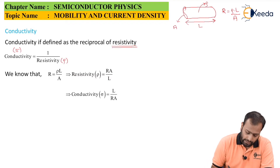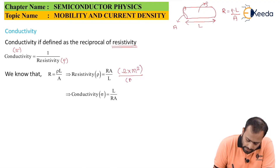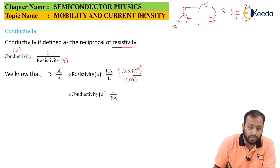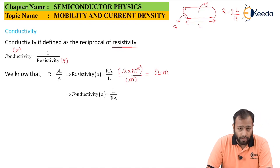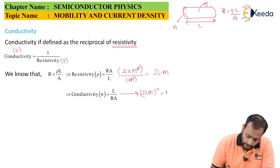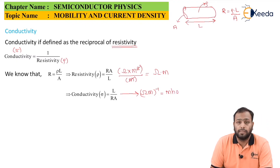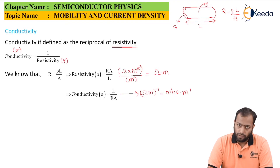For SI units: resistance is in ohms, area in meter squared, and length in meters. When meters cancel, the SI unit of resistivity becomes ohm·meter. Taking the inverse, the SI unit of conductivity is ohm·meter inverse, also referred to as mho per meter — this is the SI unit of conductivity.